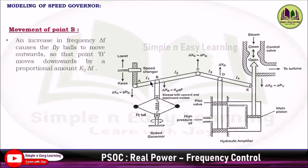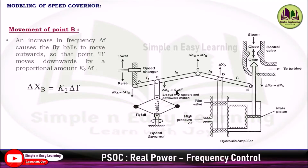Second, the movement of point B. As there is an increase in speed from the raise command given to the speed changer, the frequency del_f causes the flyball to move outwards, so point B moves downwards by a proportional amount K2 × del_f. So del_Xb = K2 × del_f, where the proportionality constant is K2.